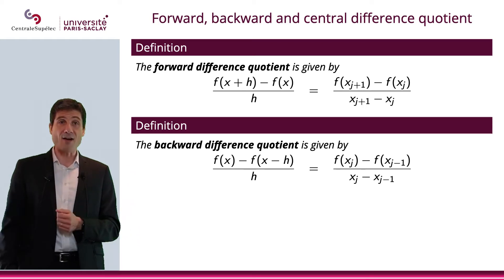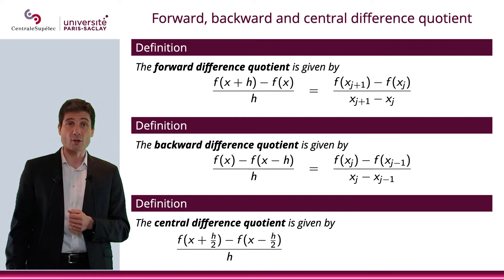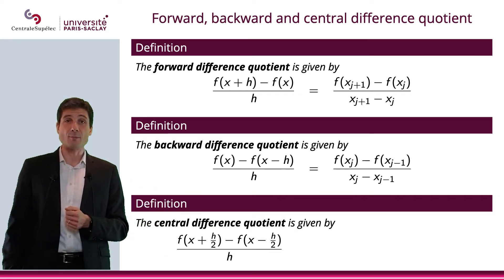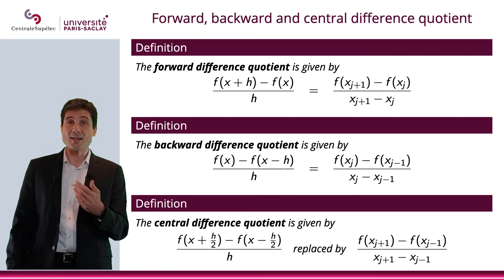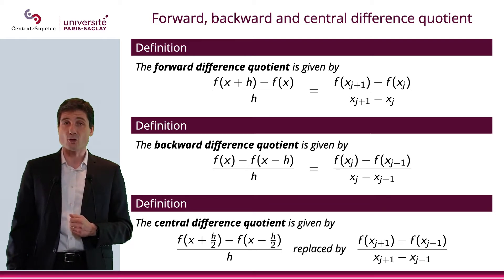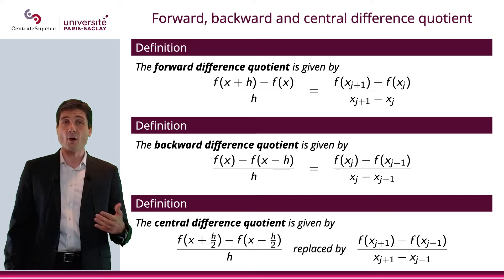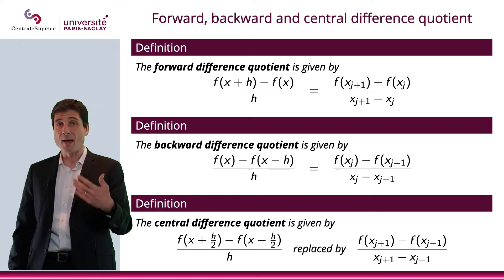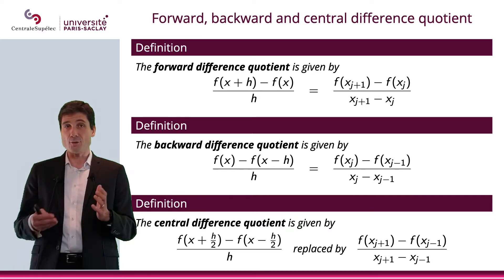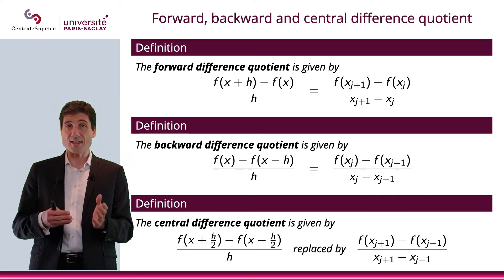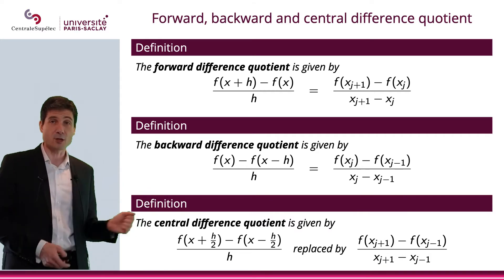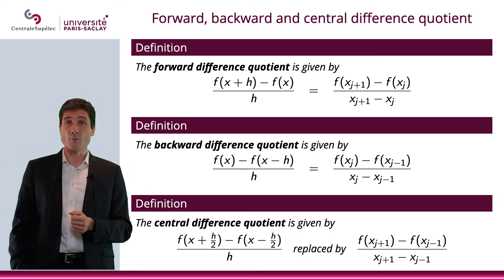And finally, the central difference quotient is given by [f(x_{j+1}) − f(x_{j-1})] / (x_{j+1} − x_{j-1}). Of course, you need to choose x appropriately so these expressions can be computed.